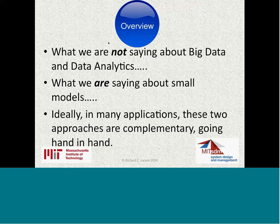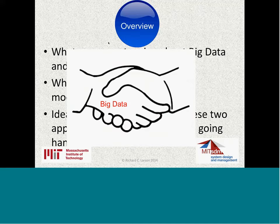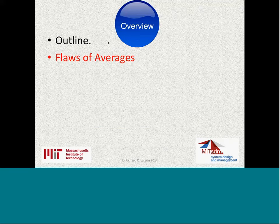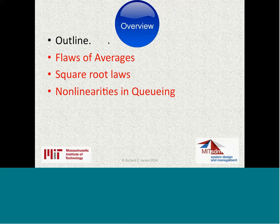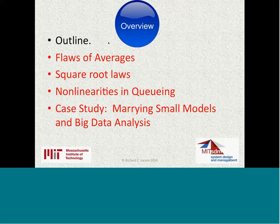We're not criticizing big data and data analytics — we're saying that beforehand, you want to look at some small, simple relationships to guide your search, guide the functions you're looking for, and guide the kinds of analyses you're going to do. Simple models give you the strategy for where in the ocean to go fishing. In many applications, big data and small models are not contradictory but complementary — they go hand in hand. Today we'll sample three things: laws of averages, square root laws, and nonlinearities in queuing, then do a case study marrying small models with big data analysis.